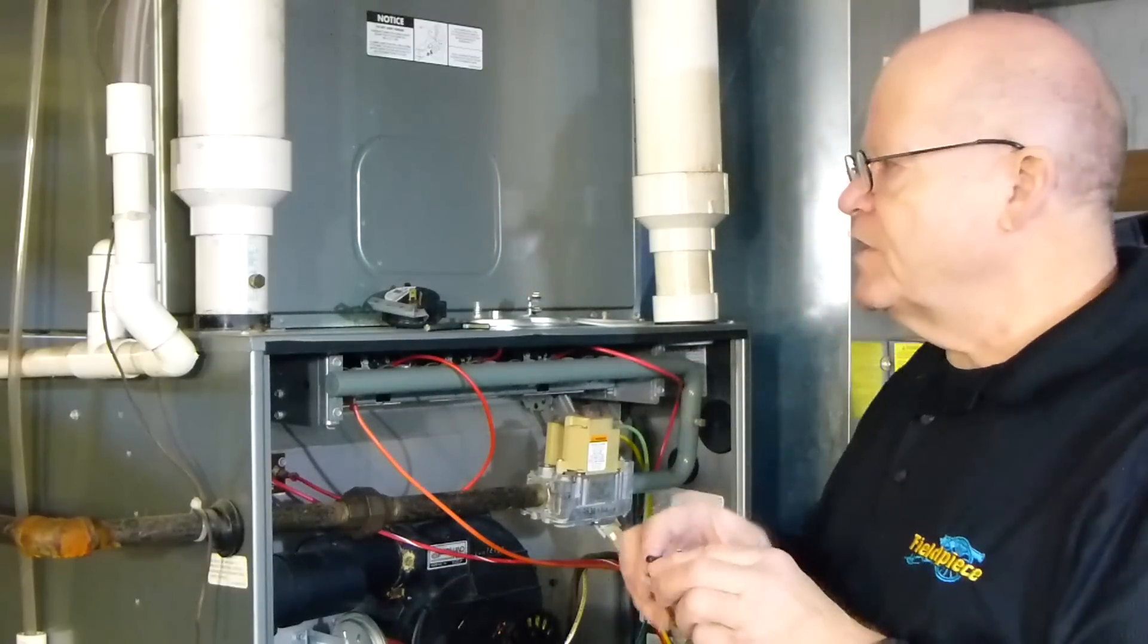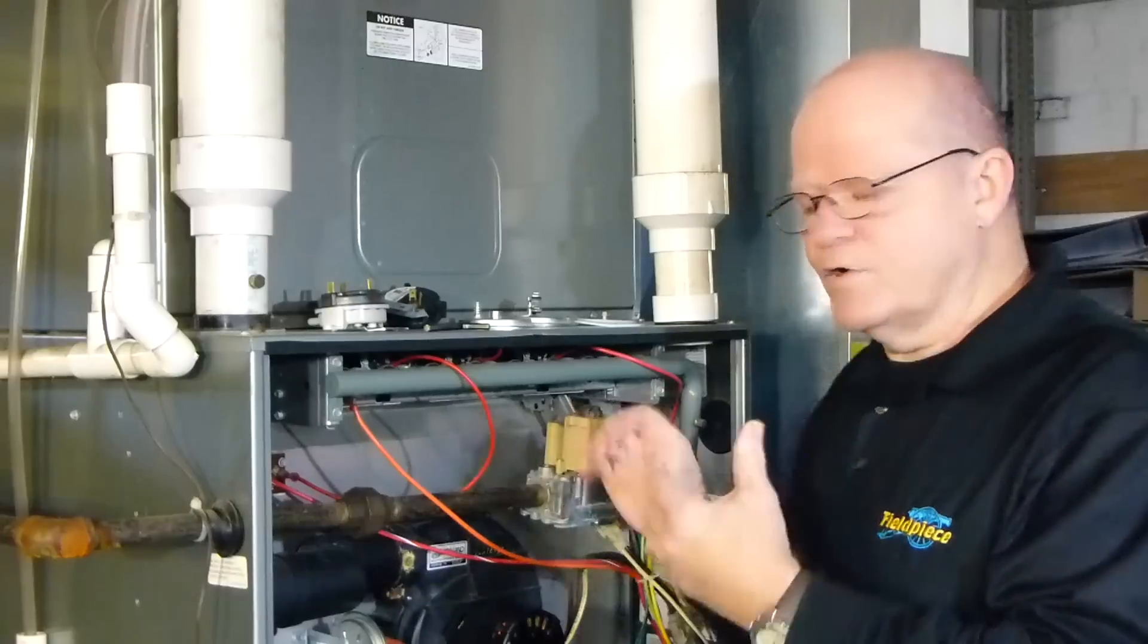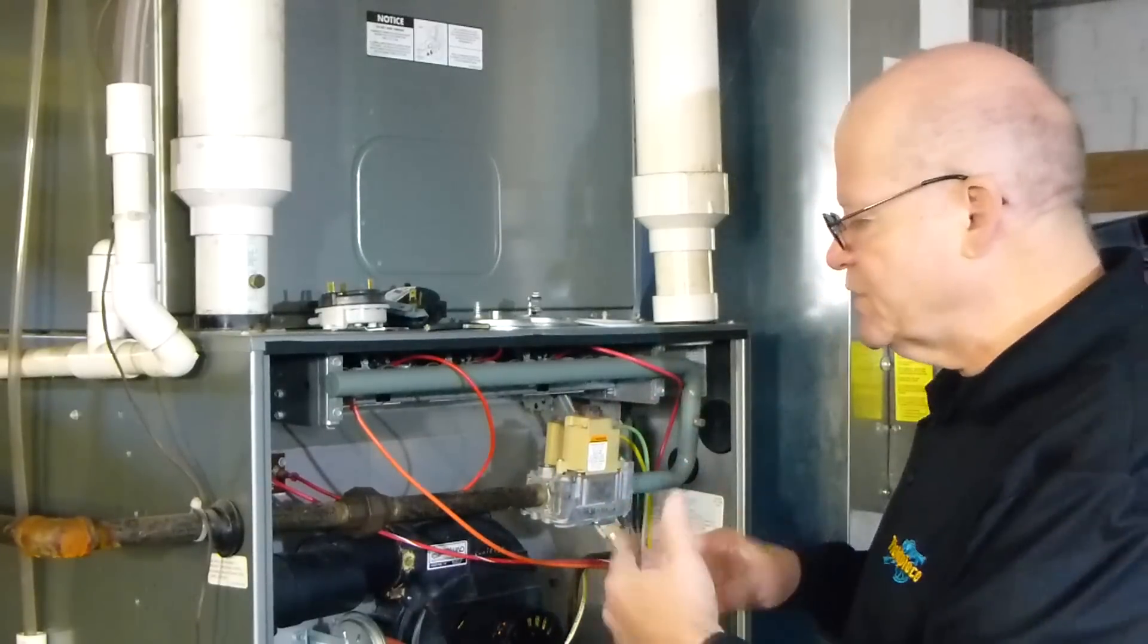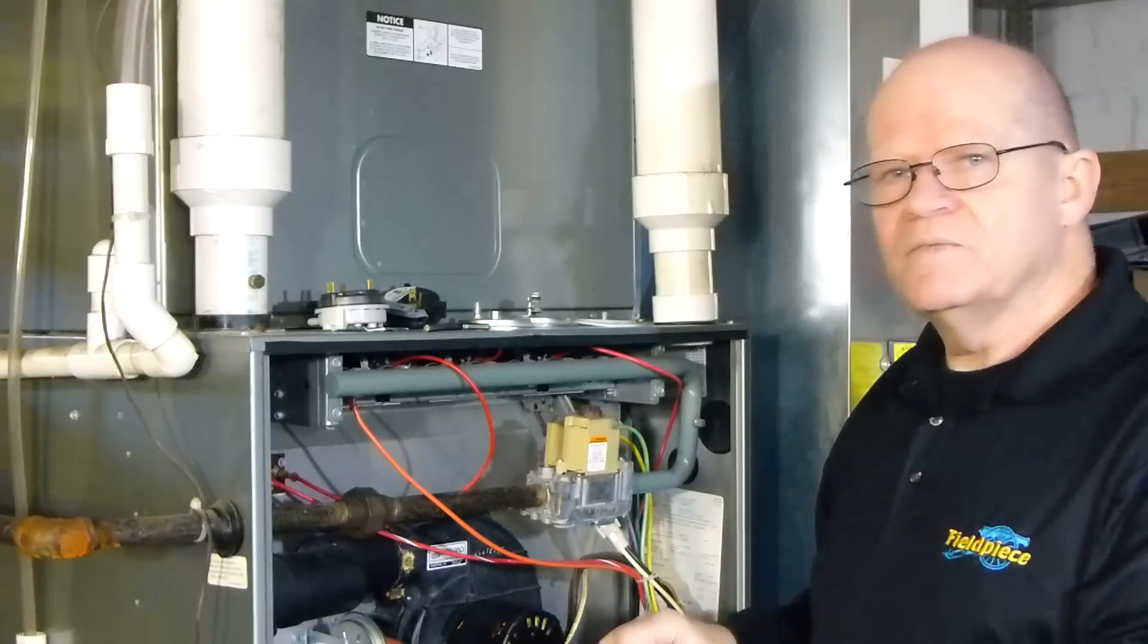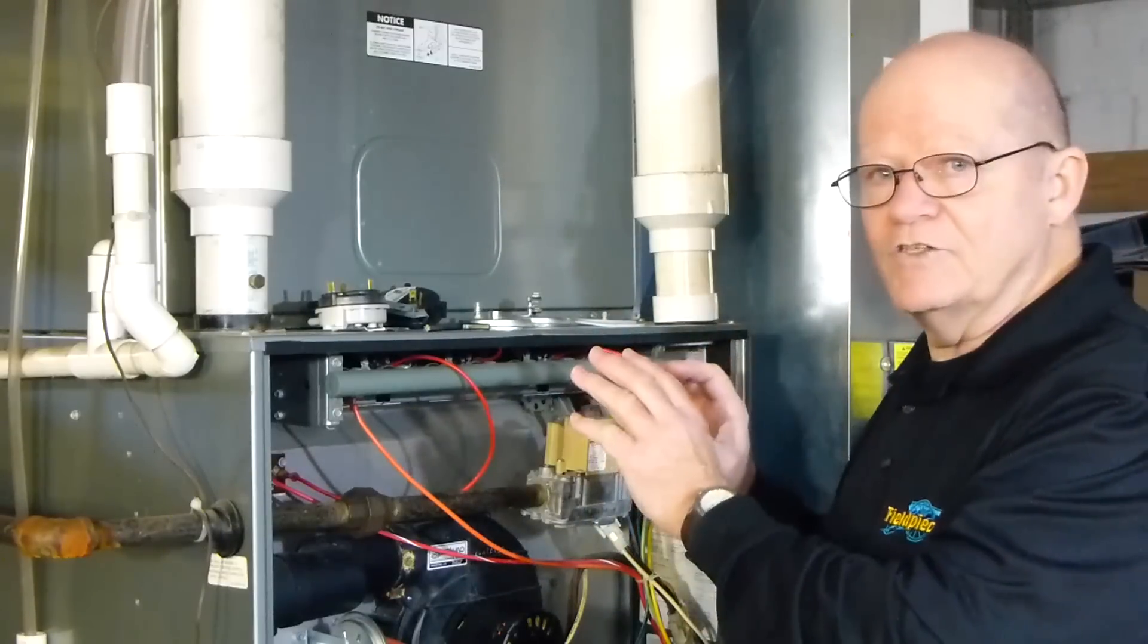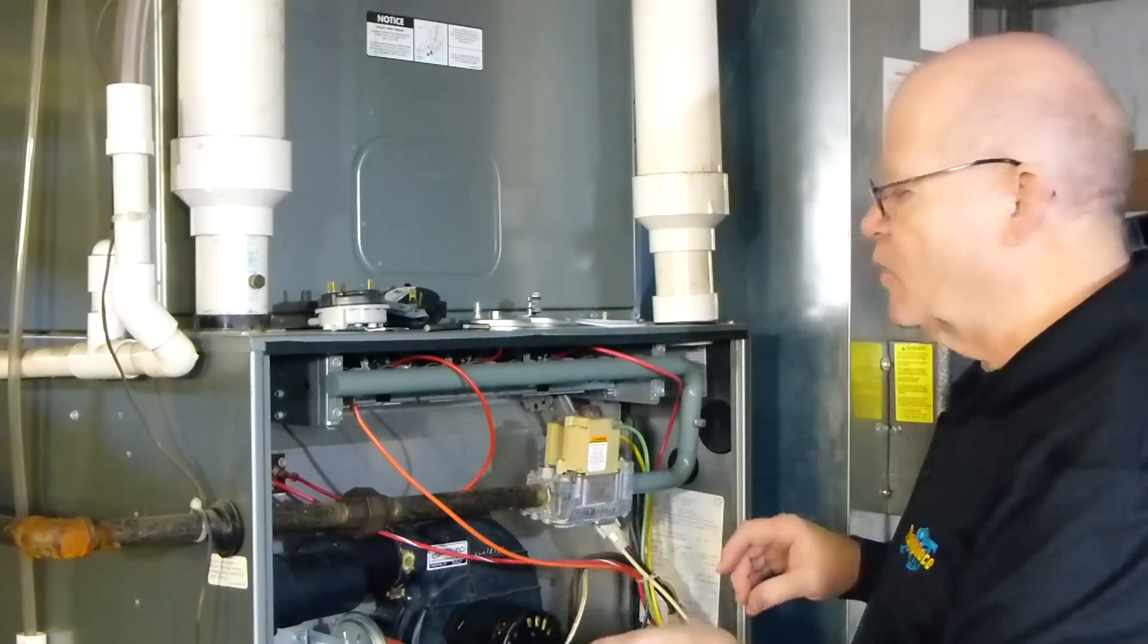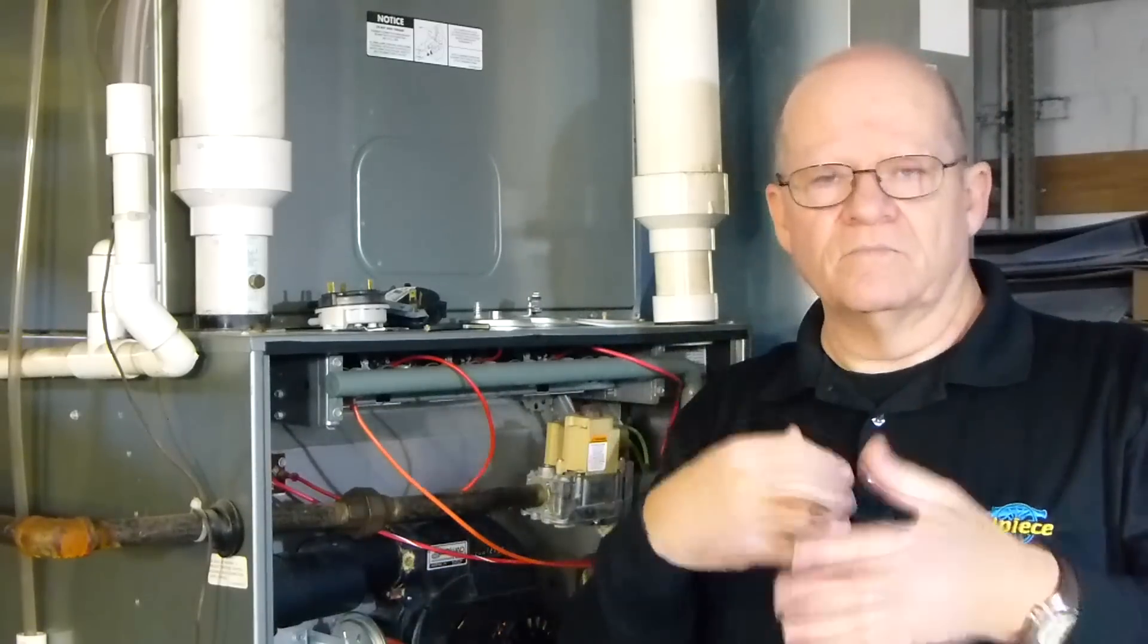So if you're testing a dual pressure switch, test the negative side. That's going to give you all the information that you need. The other thing is when it's hooked up to the furnace, what you'll see is one side hooked up to either the collector box or the inducer, and the other side is tied into the burner or the gas valve and the burner box.